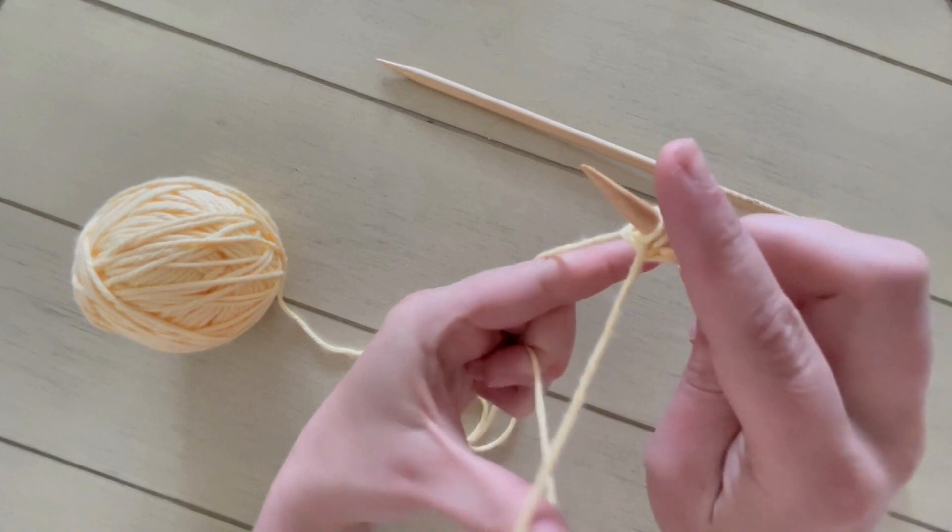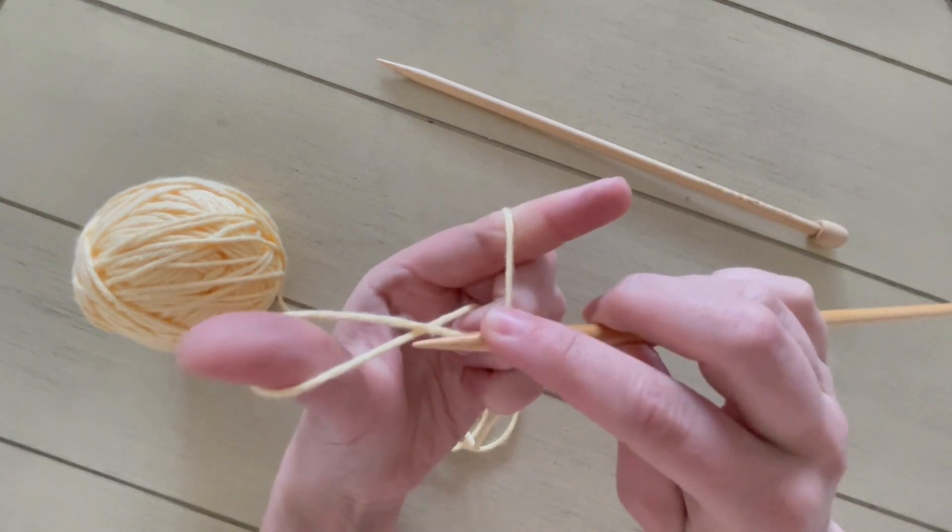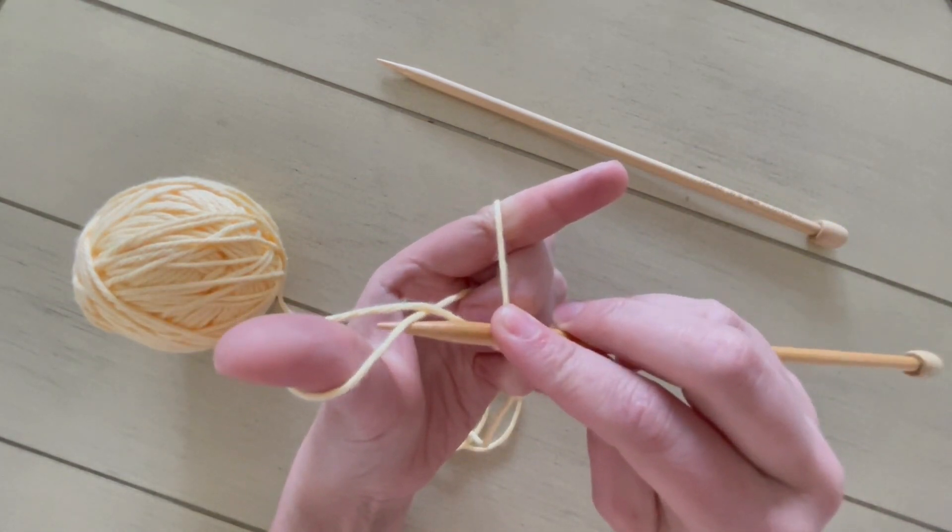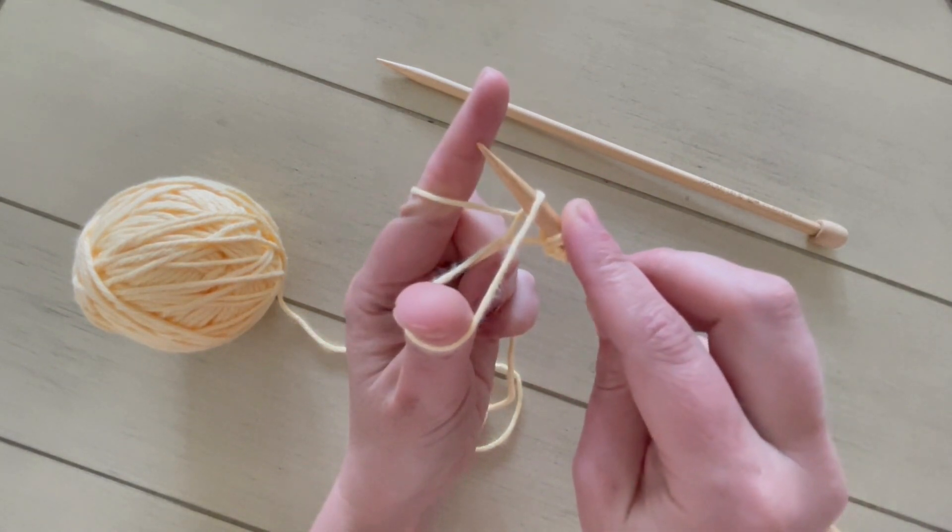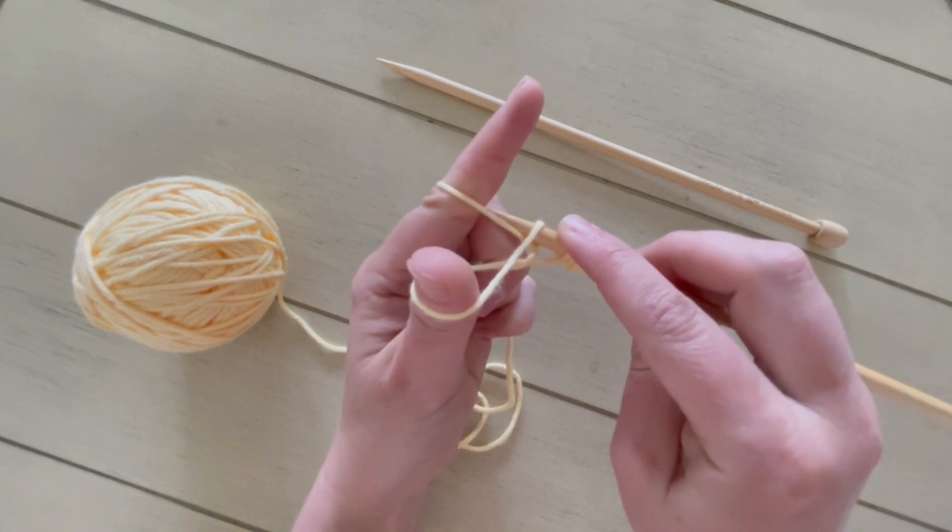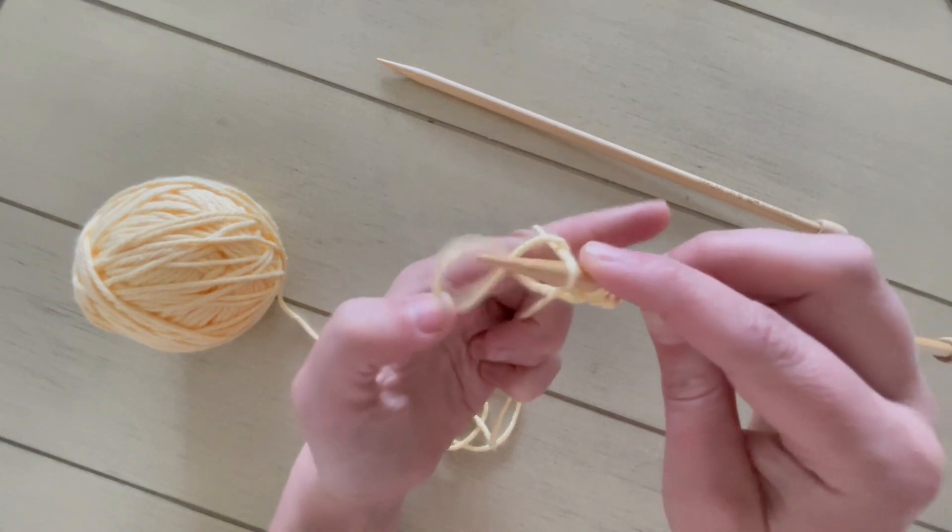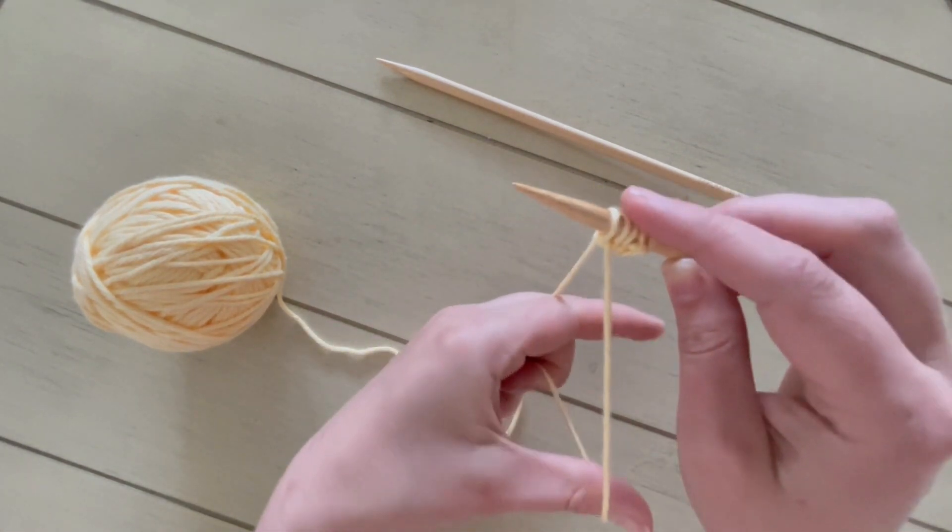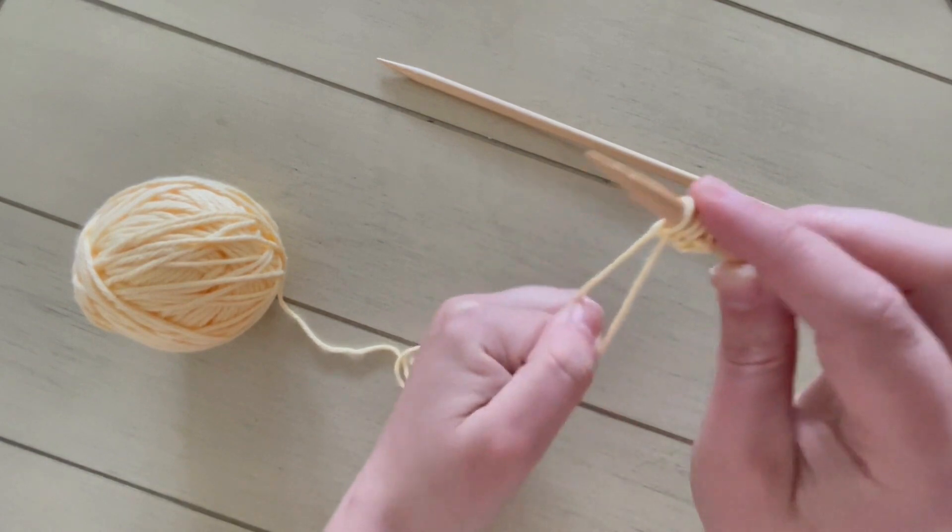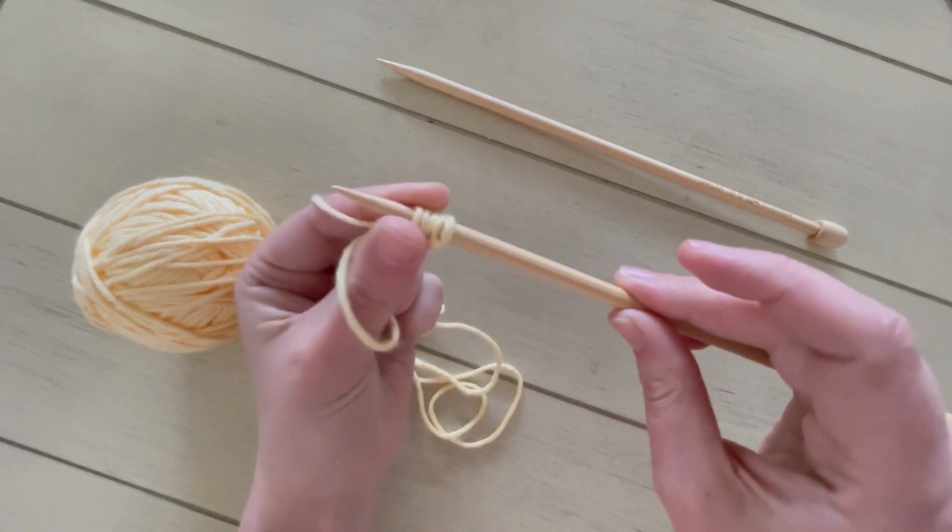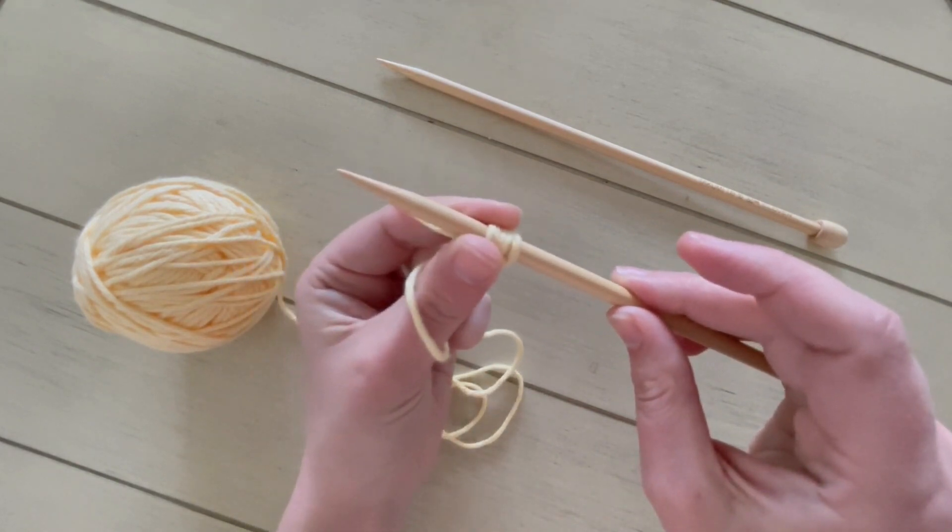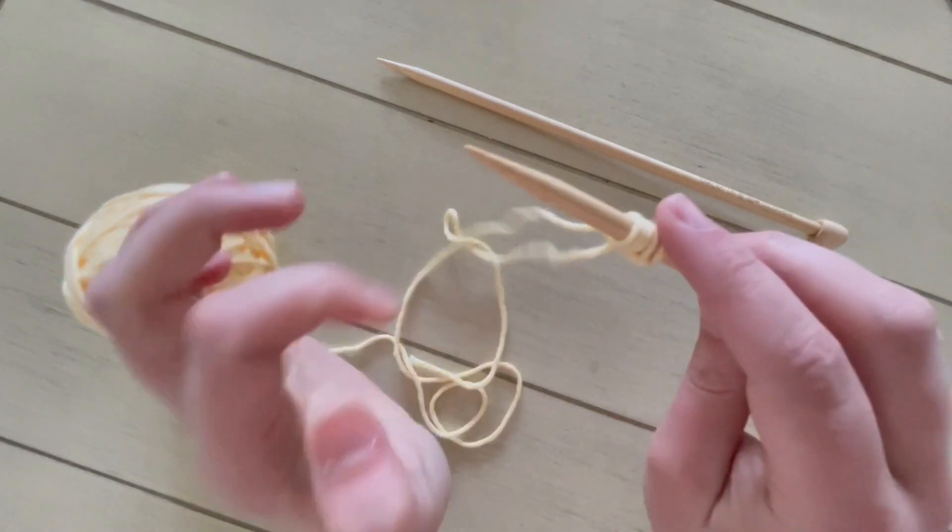Now bring down that slingshot again and let's do the poem again. Under the first strand, past the next two, wrap around the third, then pop the yarn through. Give it a little tighten, a little tighten tug. You don't want it too tight or else it gets hard to slide back and forth on your needle, but you don't want it too loose either because then it falls off.